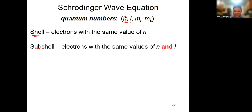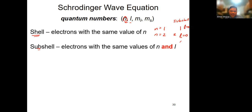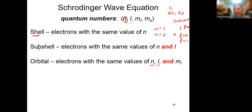An N=1 has one subshell where L=0. An N=2 has two subshells: L=0 and L=1. So for N=1 you only have 1s as the subshell, while for N=2 you have 2s and 2p. For orbitals, the electrons have the same values of N, L, and M sub L.